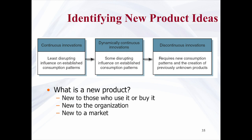The innovation continuum illustrates the range that new products fall into and the amount of learning consumers must go through to use them. Continuous Innovation is the least disrupting influence on established consumption patterns, requires less R&D, and examples include a faster computer or mobile phone. Dynamically Continuous Innovations have some disrupting influence, require less learning, and are less disruptive — for example, the Gillette Sensor razor brings new technology to an unchanged category, wet shaving. Discontinuous Innovations require new consumption patterns and the creation of previously unknown products, representing a break from the past, such as VCRs or email.